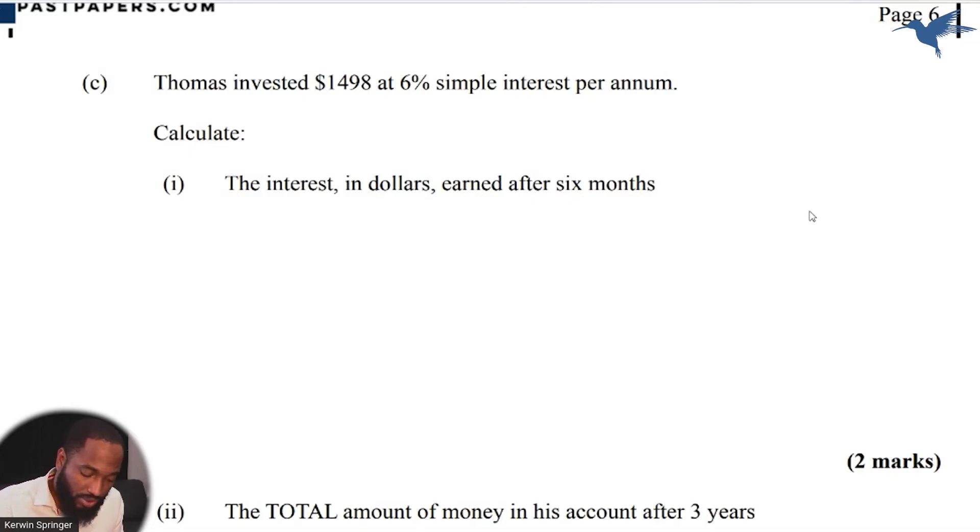So the simple interest formula will come into play here. Simple interest, because we are working on the interest, is equal to principle by rate by time over 100. And what is the principle? Thomas invested this number. Principle is 1498. The rate is 6% per annum, and the time is not six but 0.5.